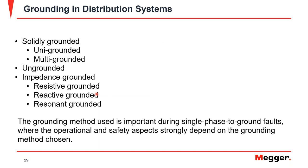Regarding grounding, distribution systems can use solidly grounded systems (most common in North America, including Mexico, the United States, and Canada), ungrounded systems, or impedance grounded systems (resistive, reactive, or resonant, more common in Europe). It is very important to know the grounding method used, as it has a large effect during single-phase-to-ground faults, and you must know your grounding system to properly design and test your distribution protection system.